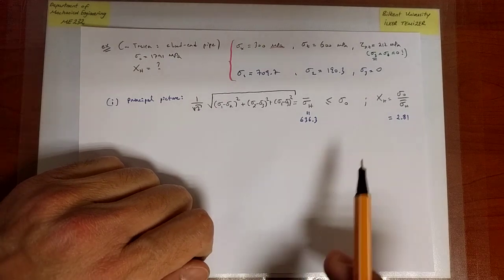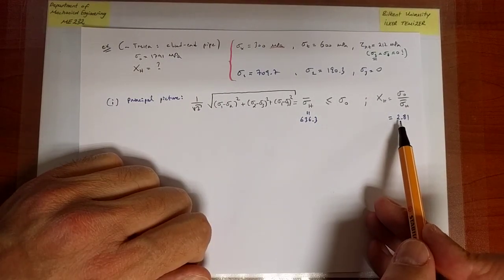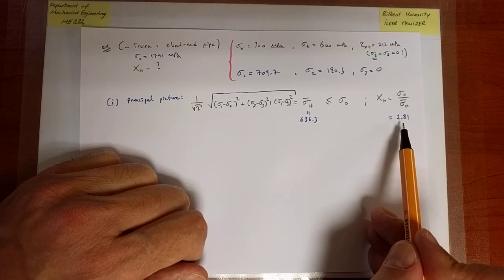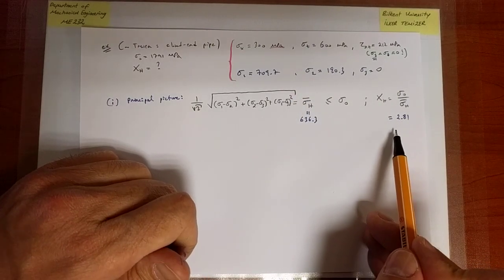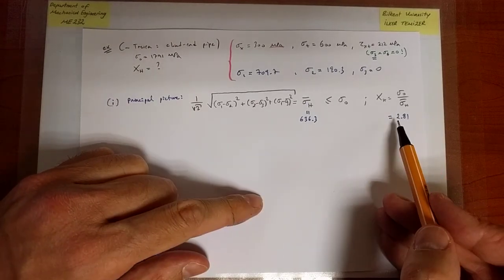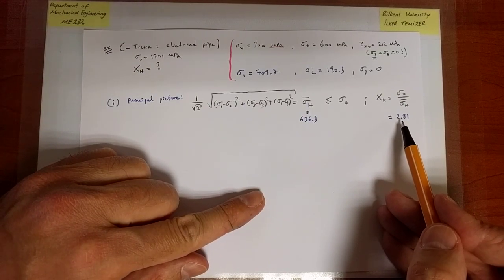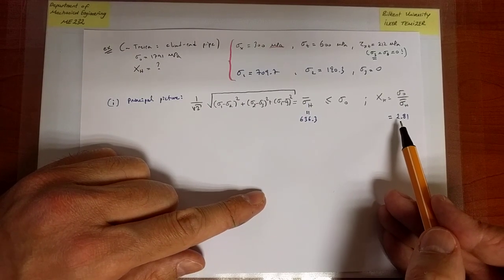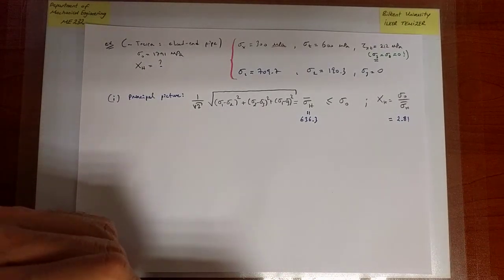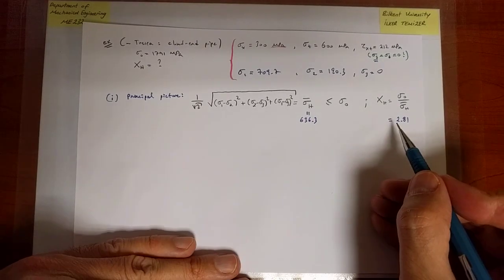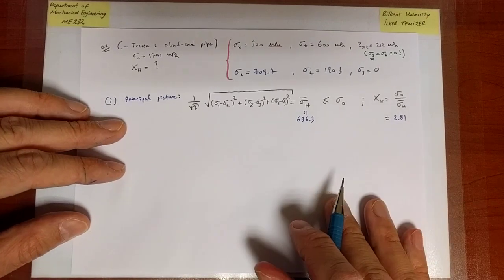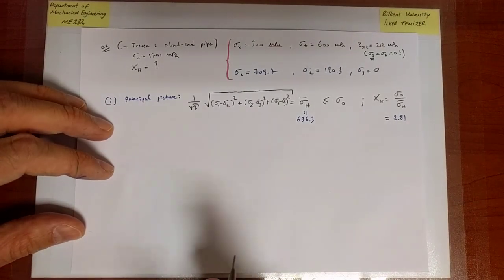Now at this point you may want to go back to the Tresca criterion and remember that the safety factor for Tresca predicted for exactly the same scenario was 2.52, so it's less. Why is it less? Well, because I know Tresca is more conservative. Is it a lot more conservative? No. The difference between the two numbers is about 10 percent. So it's not a huge difference. On top of that huge safety factor, a 10 percent error is not a big issue in practice. Whether I use one criterion or the other is a matter eventually of mostly convenience.